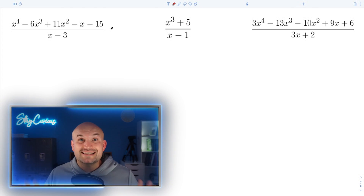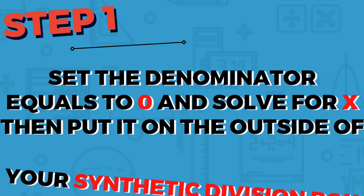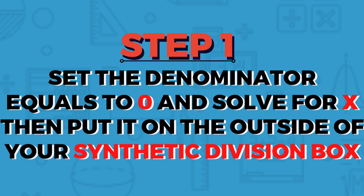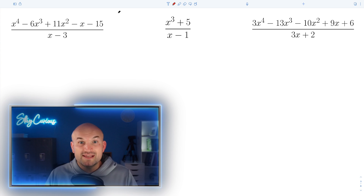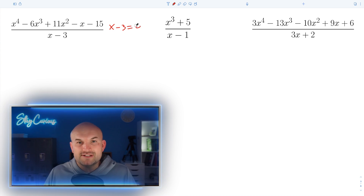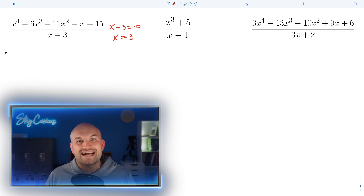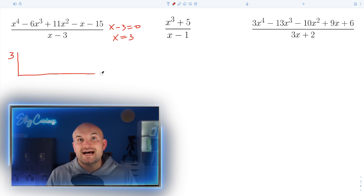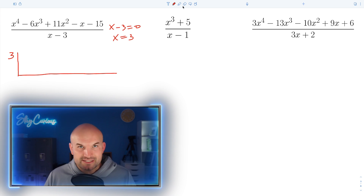Now we need to work on step one for synthetic division: set the denominator equal to zero and solve for x, then put it on the outside of your synthetic division box. In this first example, you can see I have x minus three. Set that equal to zero and solve for x, which gives x equals three. I'm going to take that three and put it outside of my synthetic division box, as you can see here.